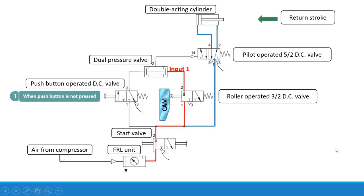The arrangement of the circuit is as shown. The various components which are used are: FRL unit, start valve which is the direction control valve and is a normally open valve, then a push button operated direction control valve, then a roller operated 3x2 direction control valve, then a dual pressure valve which is the important part of this AND circuit and logic circuit, then a 5x2 direction control valve and the double acting cylinder.